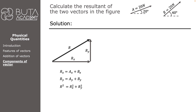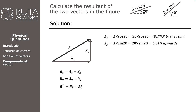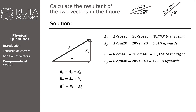First, we calculate the X component of vector A. The X-axis is adjacent to 20 degrees, so AX equals A times cosine 20, giving 18.79 N to the right. The Y-axis is opposite to 20 degrees, so AY equals A times sine 20, which is 6.84 N upwards. Similarly, BX equals B times cosine 40, which is 15.42 N to the right, and BY equals B times sine 40, which is 12.86 N upwards.